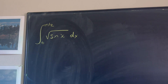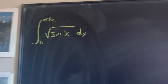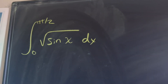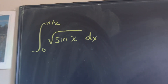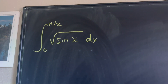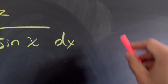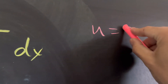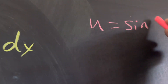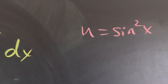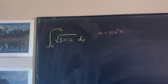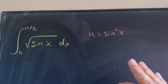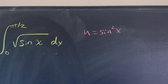So here we go. We're going to do a simple u-substitution, but it's actually going to be a little different. We're going to start off by making u equal to sine squared of x. I know it's a little different than what we're used to, but just bear with me.